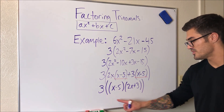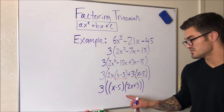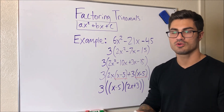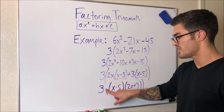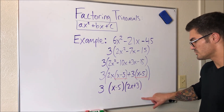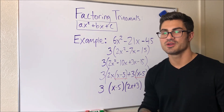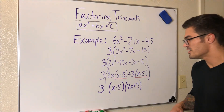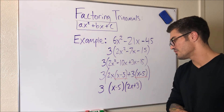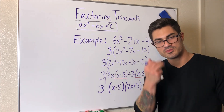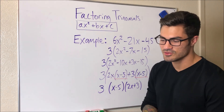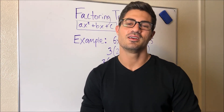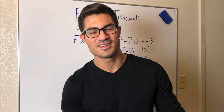Technically the extra parentheses were unneeded since we have three things being multiplied and the order of multiplication doesn't matter, but it's good to keep track of them just in case. This is another example of factoring using the AC method. Hope this helped — feel free to leave comments, questions, and suggestions. Keep making those brain gains. See you next time.